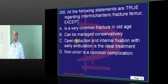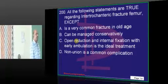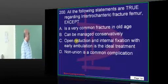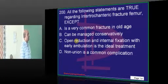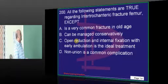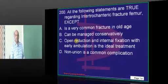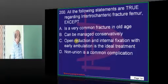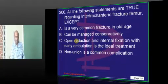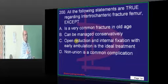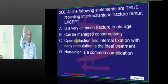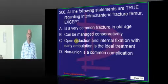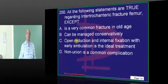Intertrochanteric fracture - nonunion is more common or malunion is more common? What is your answer? It is common in old age. If you do open reduction and internal fixation, quick mobilization is achieved. It can also be managed conservatively in debilitated, older people. Malunion is more common than nonunion in intertrochanteric fracture. Nonunion is more common in fractured neck of femur, because there, vascularity is very well retained.